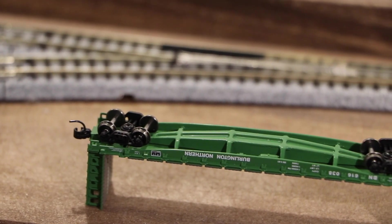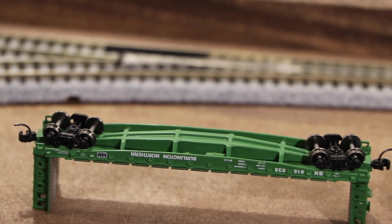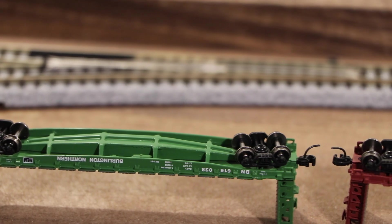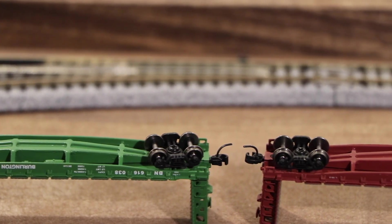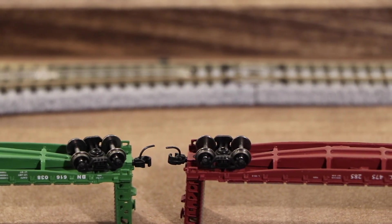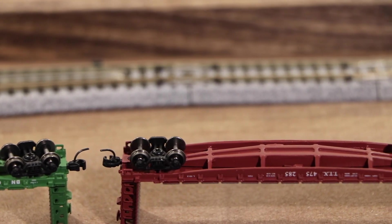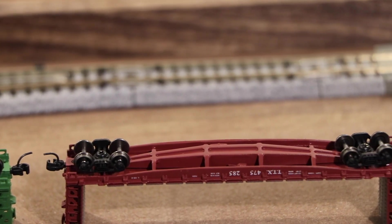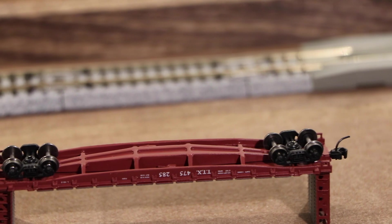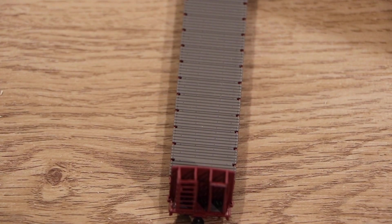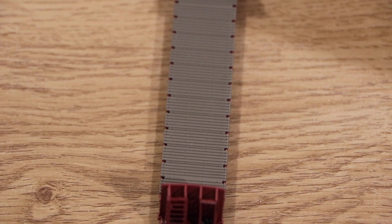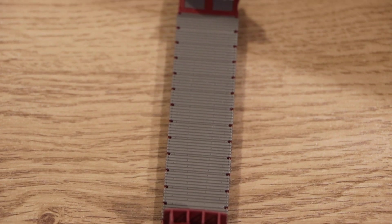These freight cars have metal wheel sets and body-mounted couplers, both of which really help out a lot during switching operations. Overall, these are great-looking cars, and again, the lettering on them is nice and sharp. The underside appears to be a metal casting for added weight, which helps with flat cars which are notoriously lightweight in N-scale. Here's a closer look at the decking of the flat car as well.